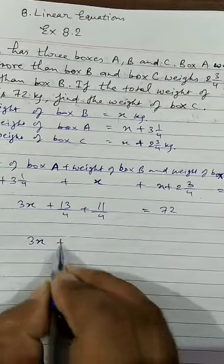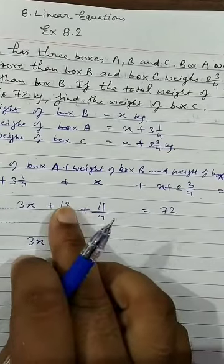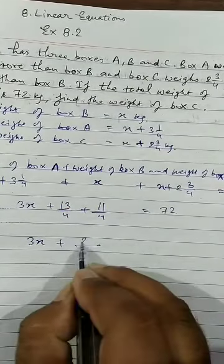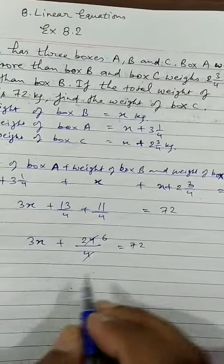So 3X plus, the denominators are same so the numerators only will be added. It gives you 24 upon 4 equals 72. 6 times 4 is 24.